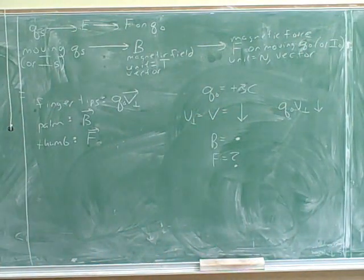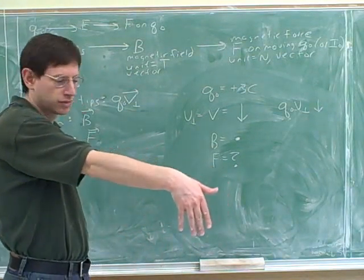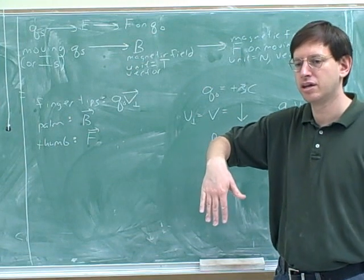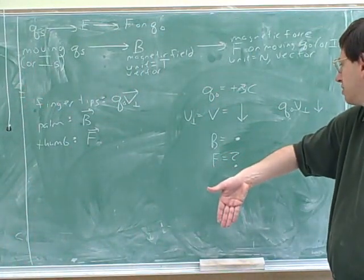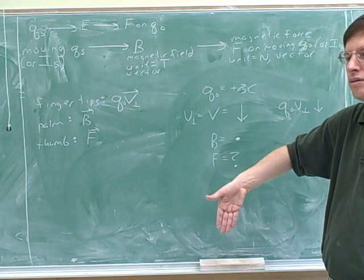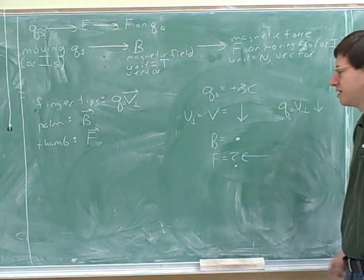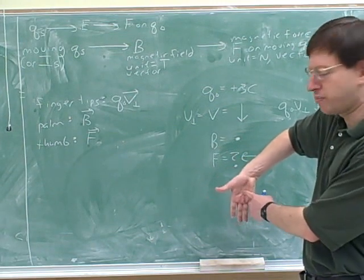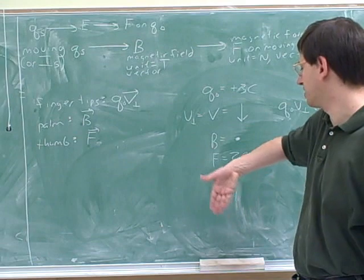Now we're ready to use the right-hand rule. I point my fingertips in the direction of q times v, which is down. Then I turn my palm in the direction of B, which is away from the board. My thumb is pointing to the left — that's the direction of the force. So qv is pointing down (fingertips), B is pointing out of the page (palm), and our thumb points to the left.